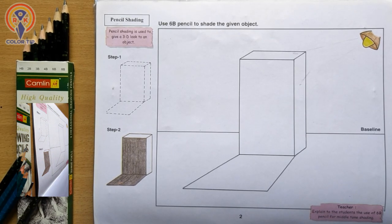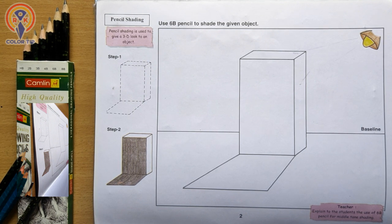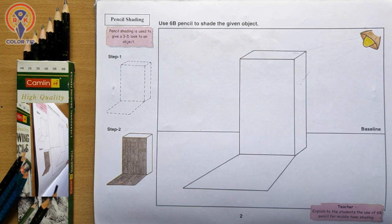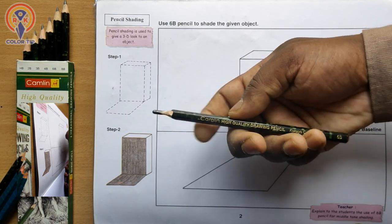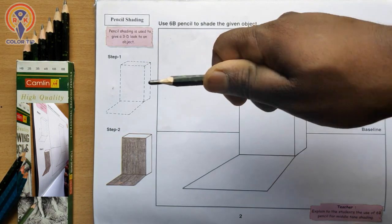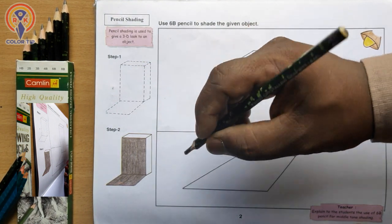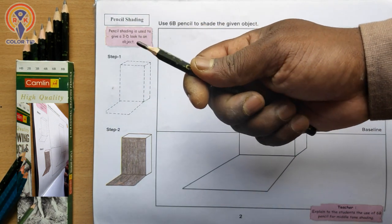Use a 6B pencil to shade the given object. I have different drawing pencils here, different grades of pencils. Let's take a 6B. Keep your pencil in underpalm position, like how you hold a knife, not like in pen position. When you hold the pencil like this, it's called underpalm position.